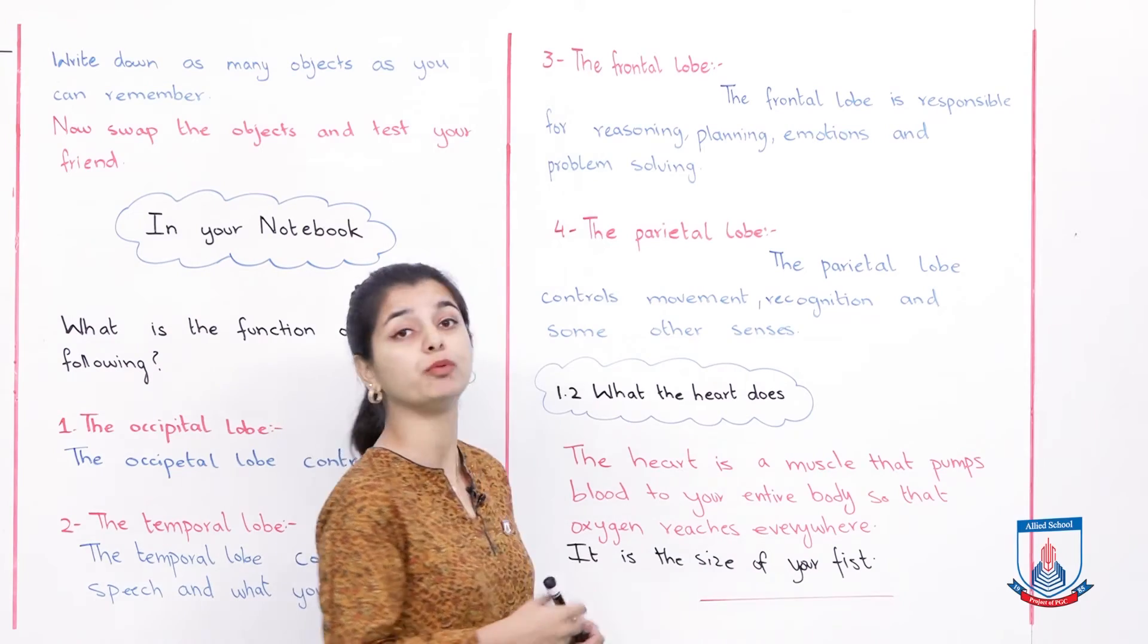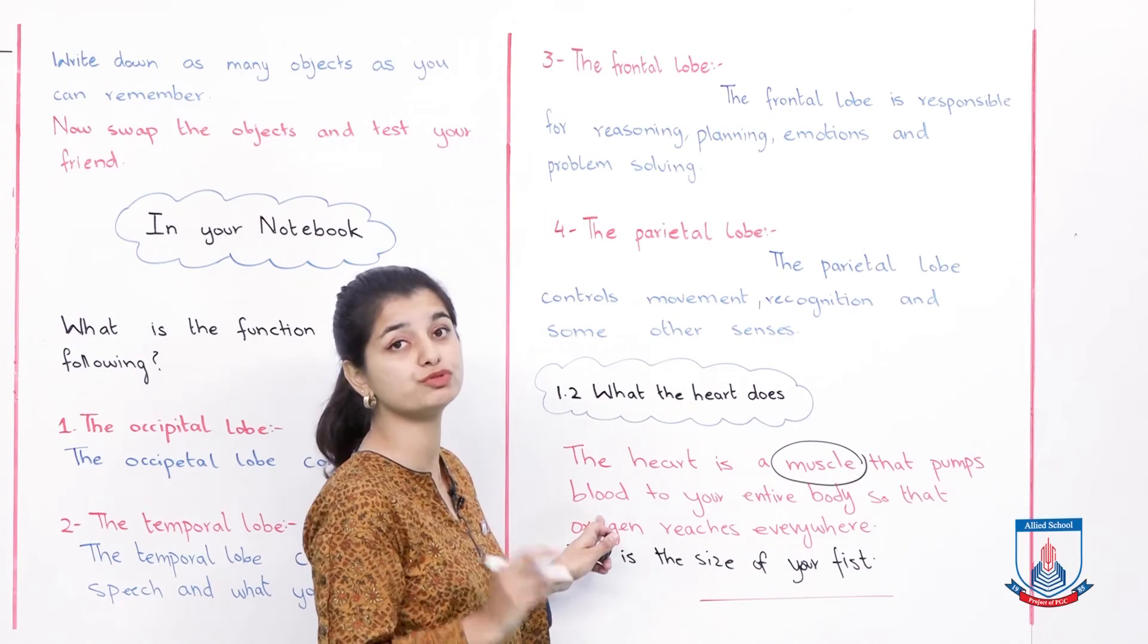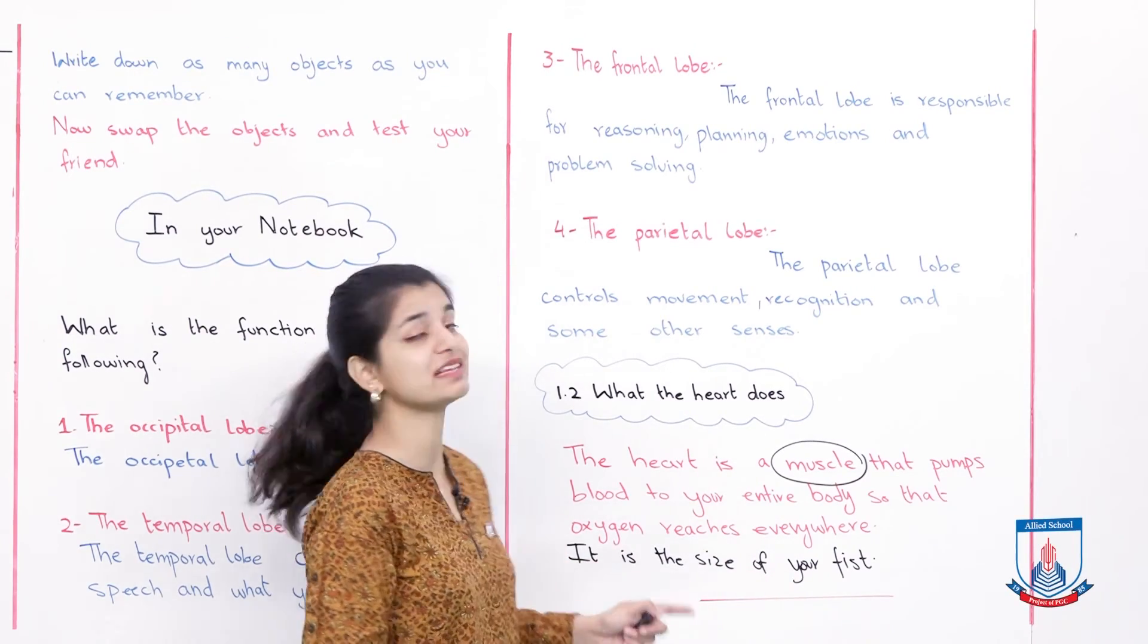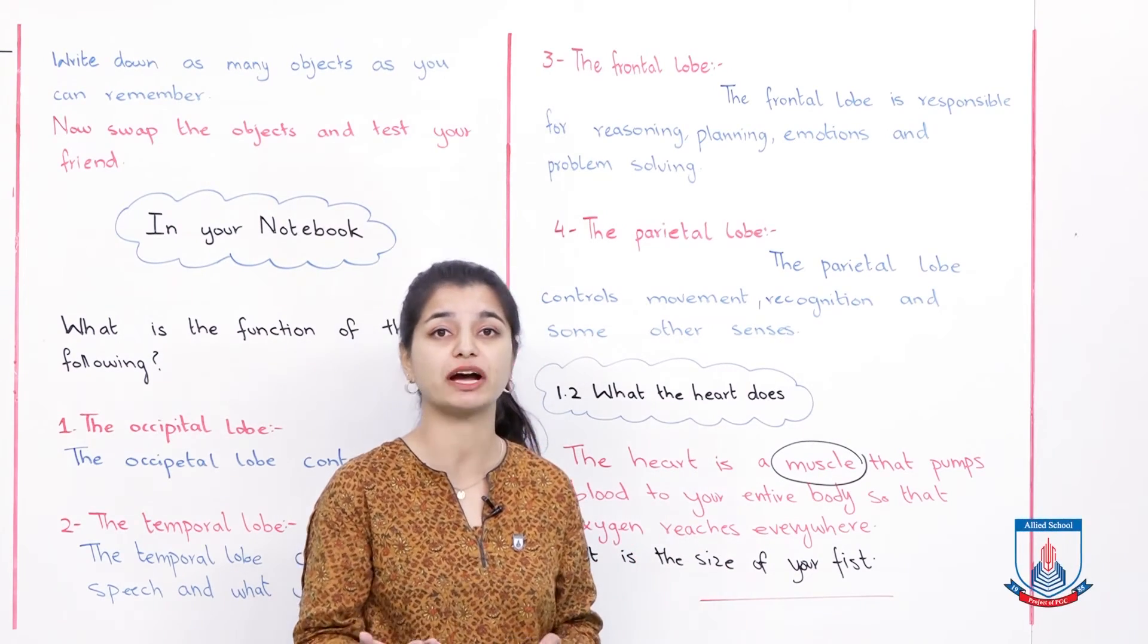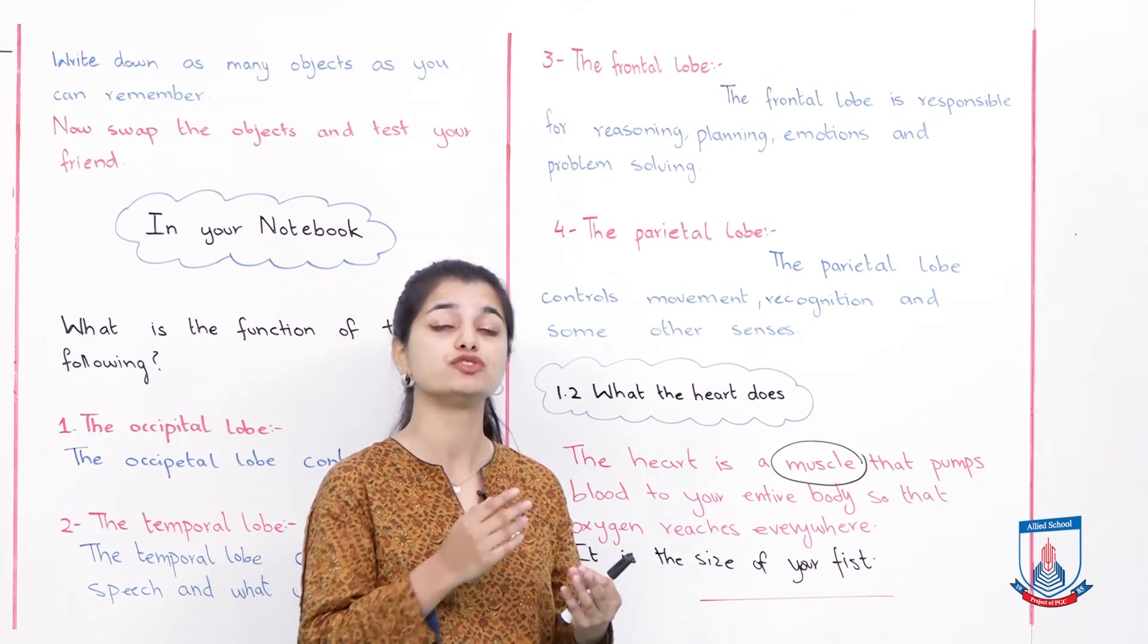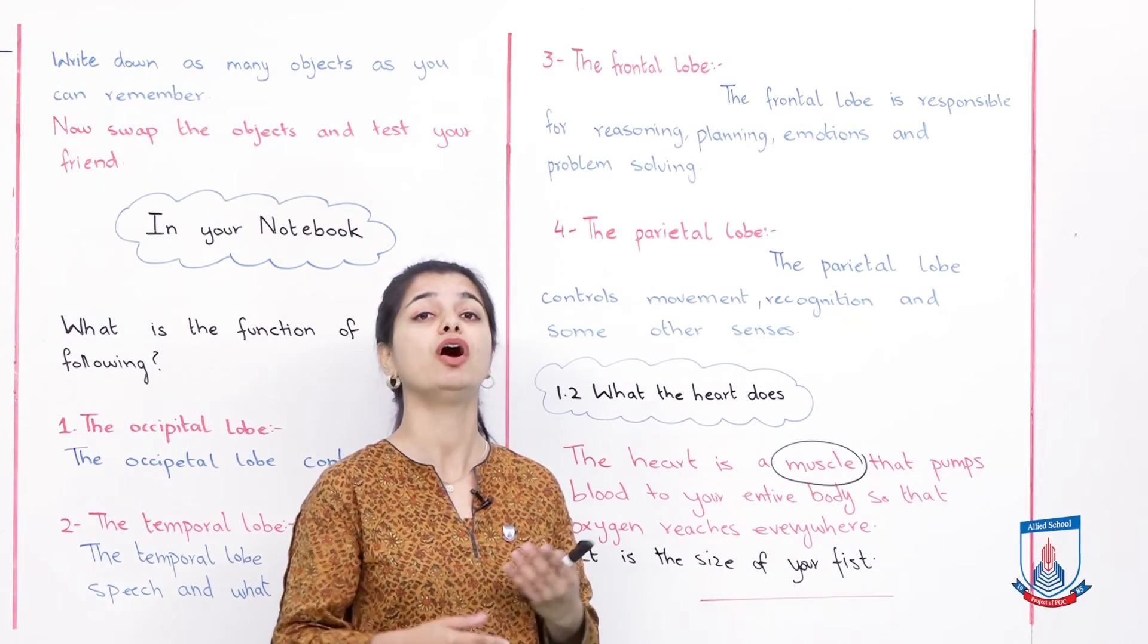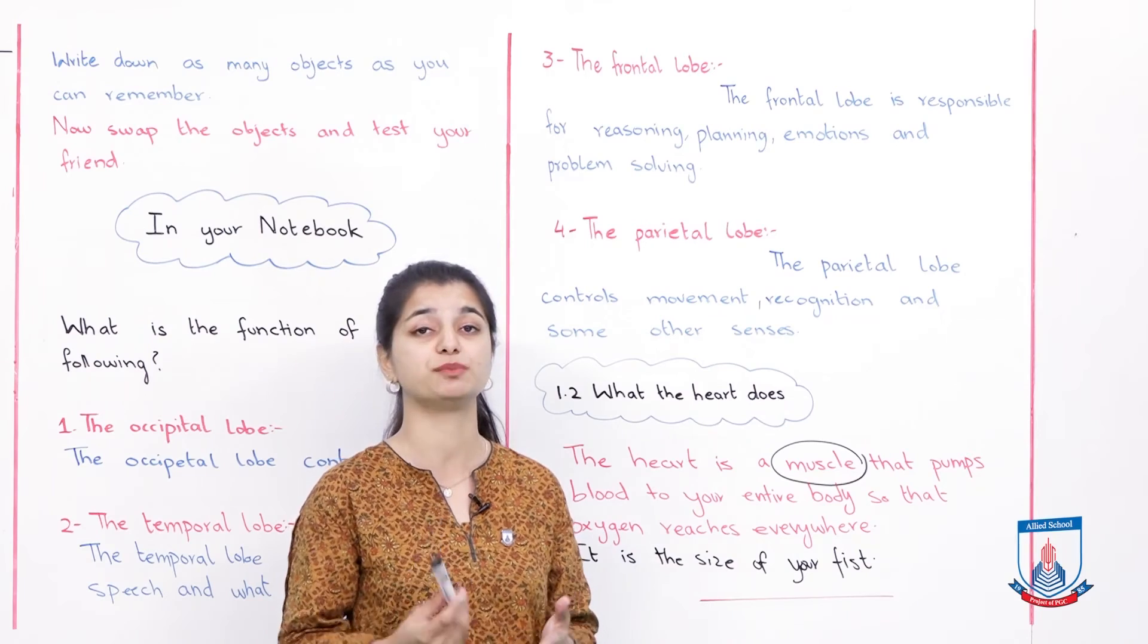Now we're talking about the human heart. Today we will not go into details because our focus for today was the brain. But obviously in the next lecture we will discuss the heart intensely. This is just a small introduction. The heart is a muscle that pumps blood to your entire body so that oxygen reaches everywhere. In your blood there is oxygen, and it's your heart which pumps oxygen to every place. It maintains the flow of blood. The heart sends blood to your body so that oxygen reaches there, and that's why you get energy, survive and perform actions.